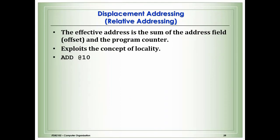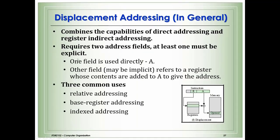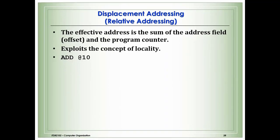Relative addressing: the effective address is the sum of the address field (offset) and the program counter. So the content of the program counter is added to the address part of the instruction to obtain the effective address — one field is the direct program counter value, and the other is a part of the instruction.